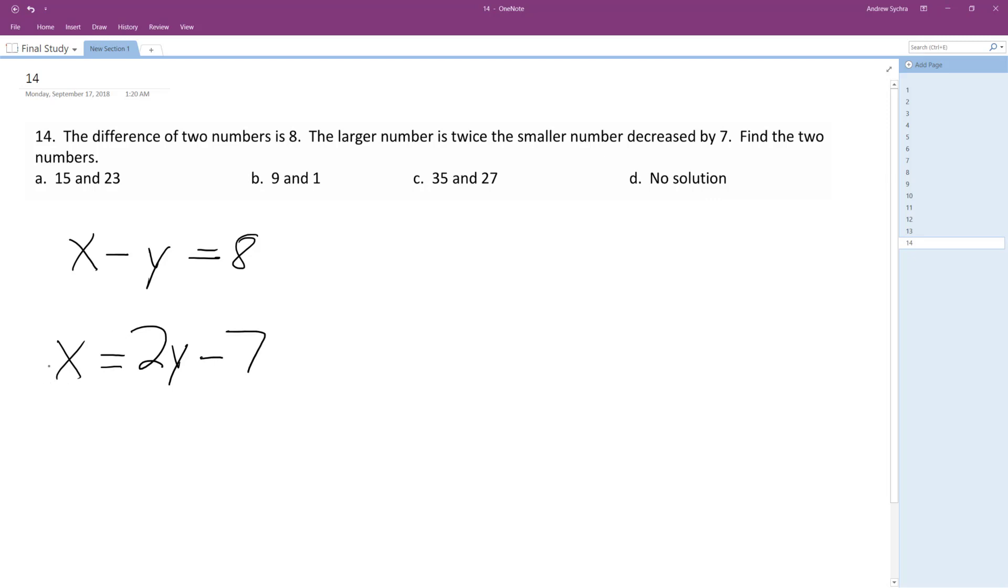So we'll just substitute here. We'll substitute the second equation into the first, so for x, we'll plug in 2y minus 7 minus y equals 8, so we'll end up with y minus 7 is equal to 8. Add 7 to both sides, so we get y is equal to 15.